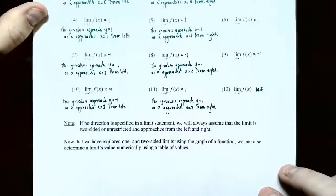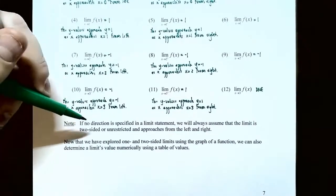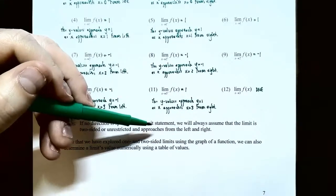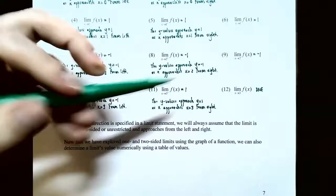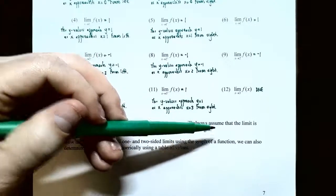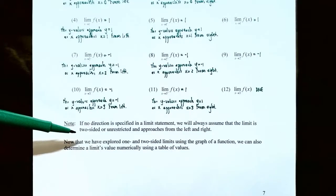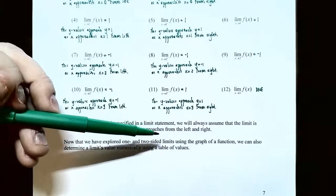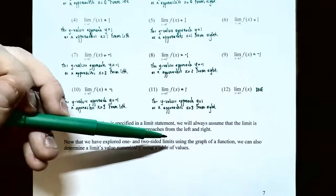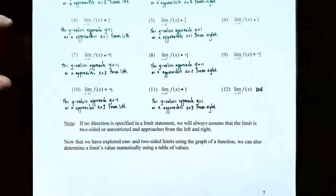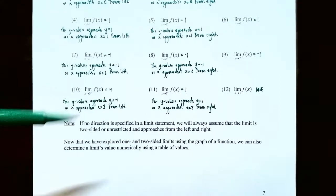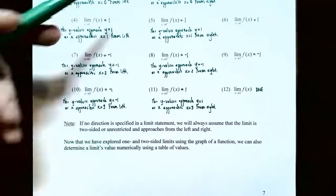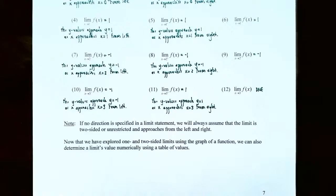Just a couple notes: if there is no direction specified in the limit statement — no minus sign or plus sign — you're assumed to be approaching from both the left and the right, which is called an unrestricted limit. Now that we've explored one and two-sided limits using a graph, we're going to find limits using a table of values — what's called finding a limit numerically.